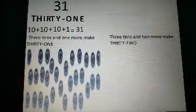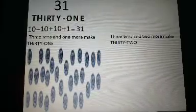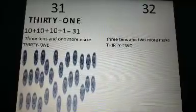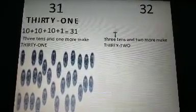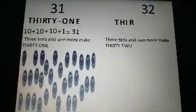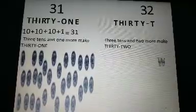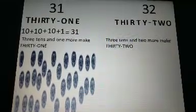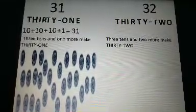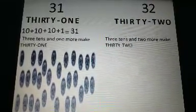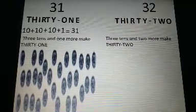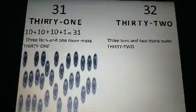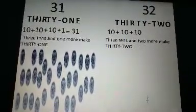Can you all see these coins? I want you all to count the number of coins in the picture. 3 and 2 makes the number 32. T-H-I-R-T-Y T-W-O, 32. Please repeat after me: T-H-I-R-T-Y T-W-O, 32. The number 32 comes just after the number 31. 3 tens and 2 more make 32.